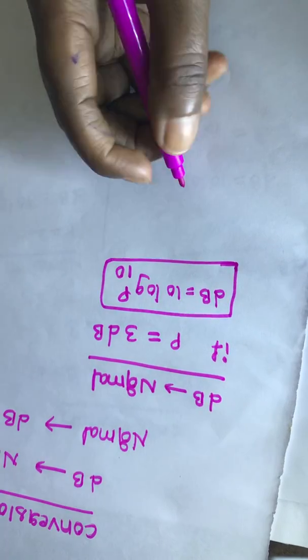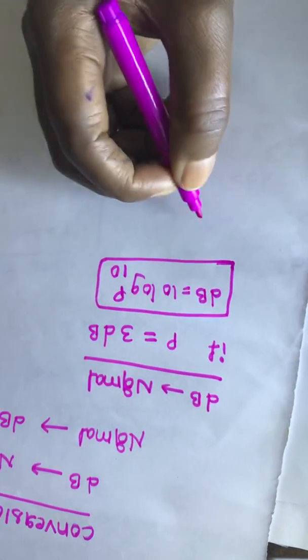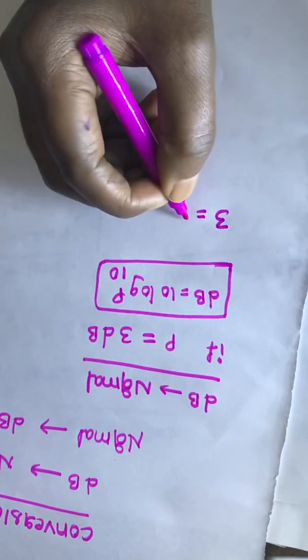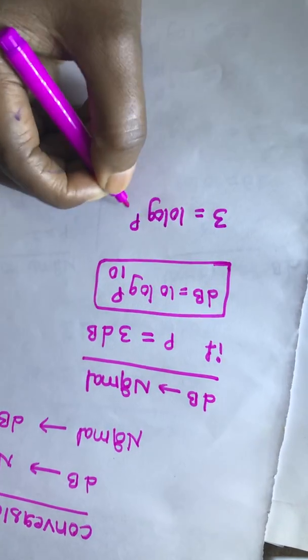Here they gave value in dB, we will submit it in this place which is equal to 3 is equal to 10 log P base 10.